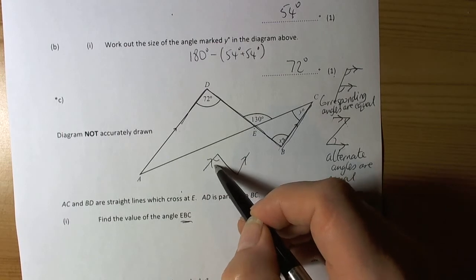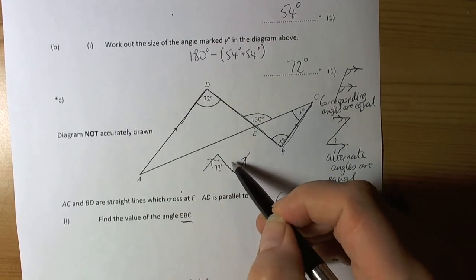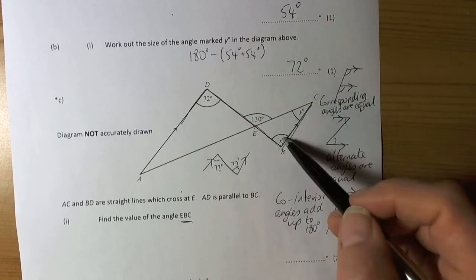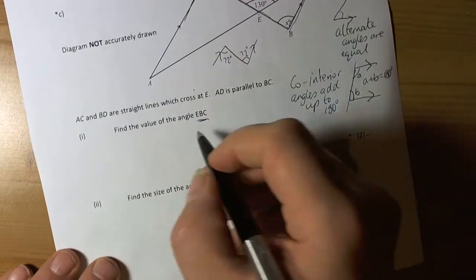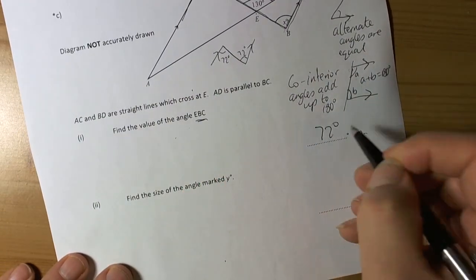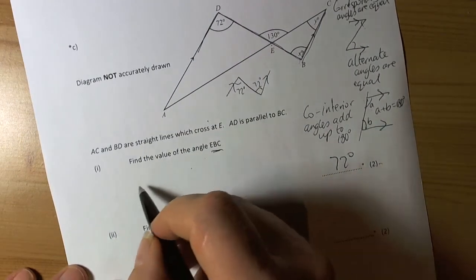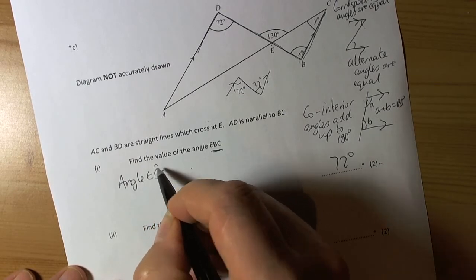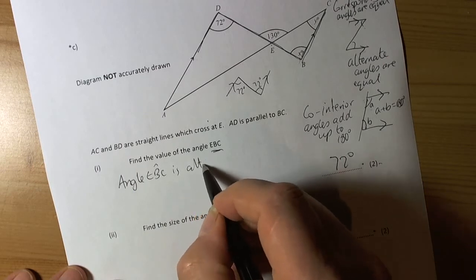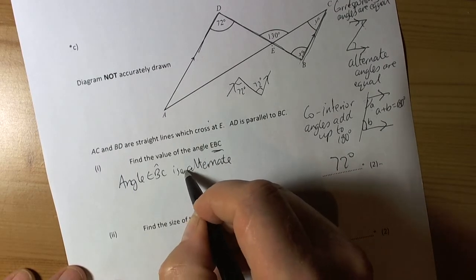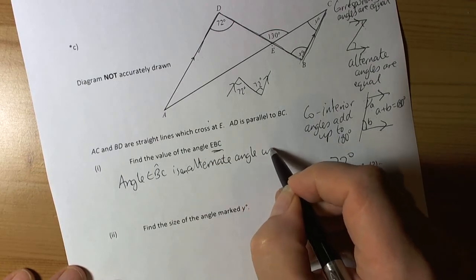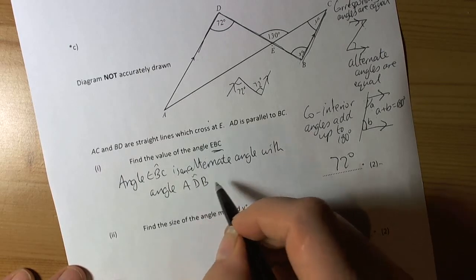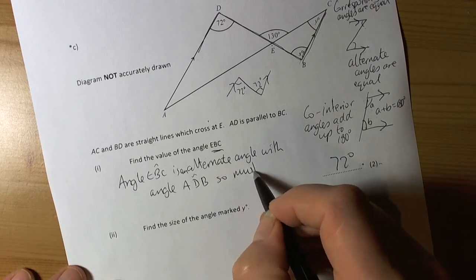So we have created a picture like this. So if that angle is 72 degrees, then this angle, the alternate angle, is also 72 degrees. So X is 72 degrees. So the answer here is 72 degrees. It's a star question, though, so we have to give a reason. So we can say angle EBC is an alternate angle with angle ADB. So must be equal.